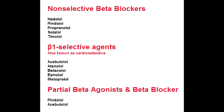Name some beta-1 selective antagonists, which have a greater effect on beta-1 blockade than on beta-2 blockade. These include acebutolol (also a partial agonist), betaxolol, esmolol (a short-acting drug), atenolol, and metoprolol.